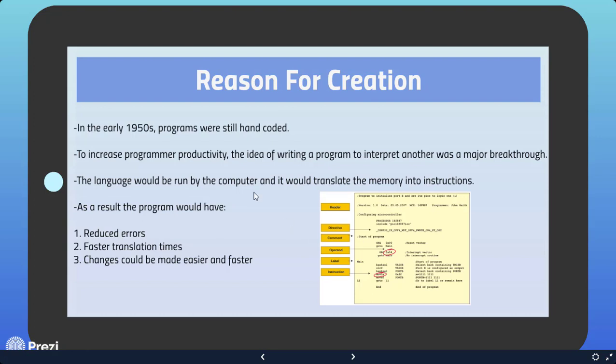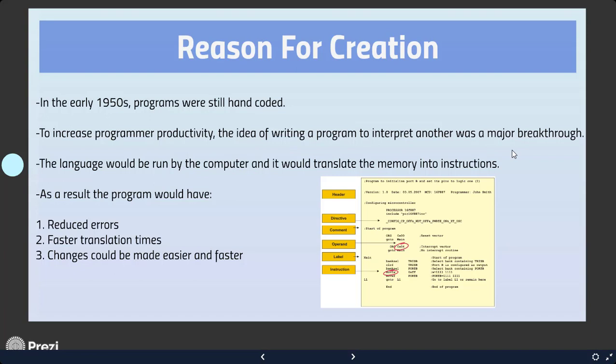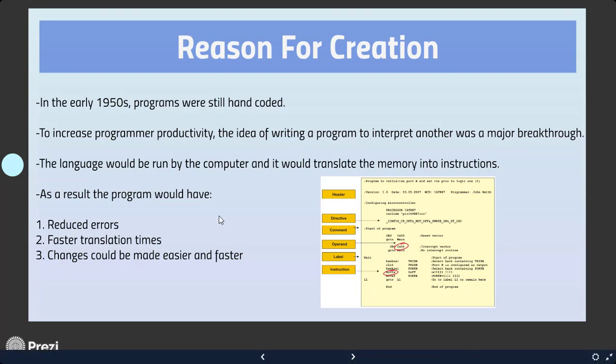The reason for the creation: in the 1950s, programs were still hand-coded. To increase programmer productivity, the idea of writing a program to interpret another program was a major breakthrough. The language would be run by the computer and it would translate the memory into instructions. As a result, the program would have reduced errors, faster translation times, and changes could be made easier and faster.